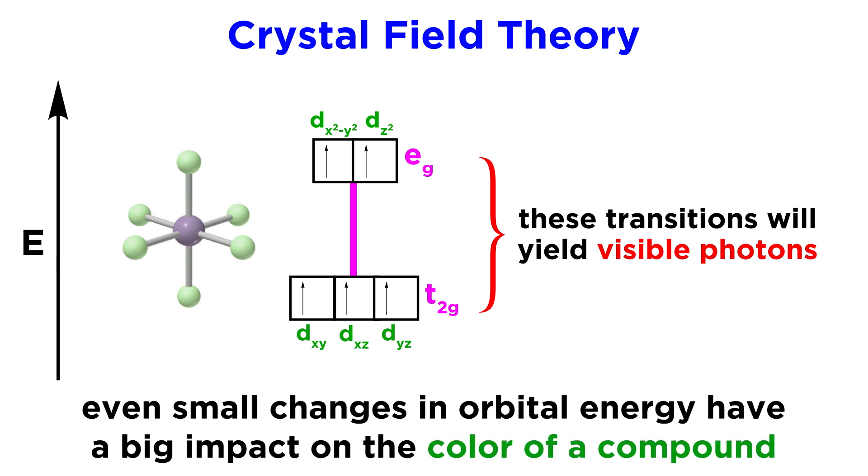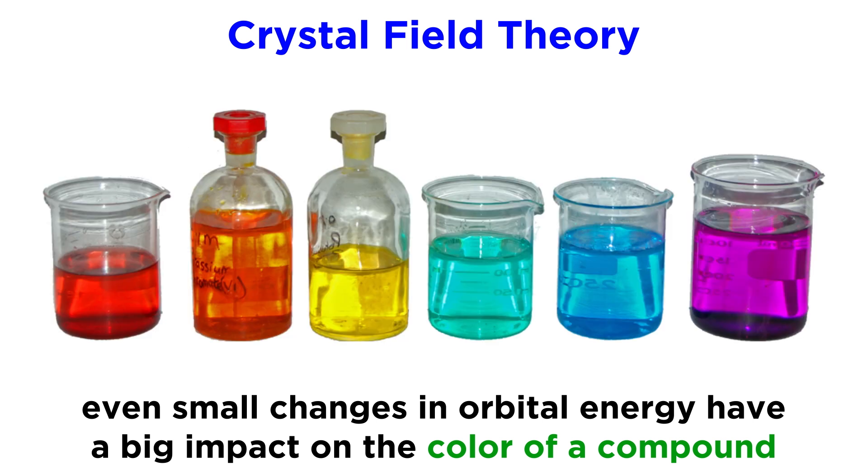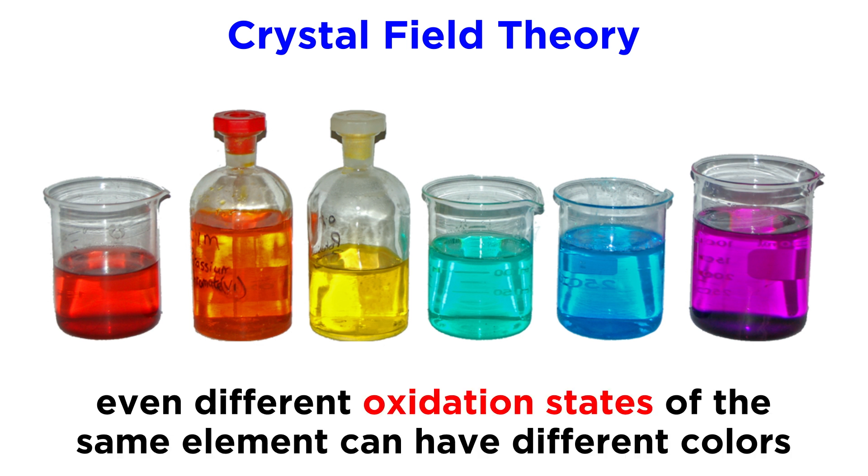Even small changes in orbital energy can have a significant impact on the color of the compound, as is seen here, with different transition metal ions exhibiting totally different colors. And this is not just for different elements, we can look at two different oxidation states for the same element, and they may have different colors.